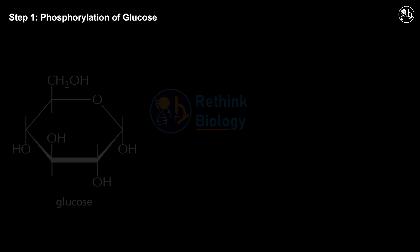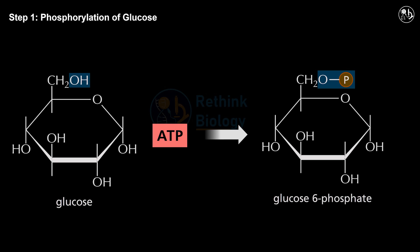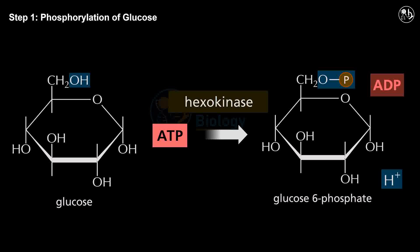There are 10 steps of glycolysis. Step 1: Phosphorylation of glucose. In this step, a phosphate group is transferred from ATP to glucose in the cell cytoplasm by the action of enzyme hexokinase. The product of this step is glucose 6-phosphate, which has a phosphate group attached to its 6th carbon atom. In this reaction, one molecule of ATP is consumed and one molecule of ADP is produced.